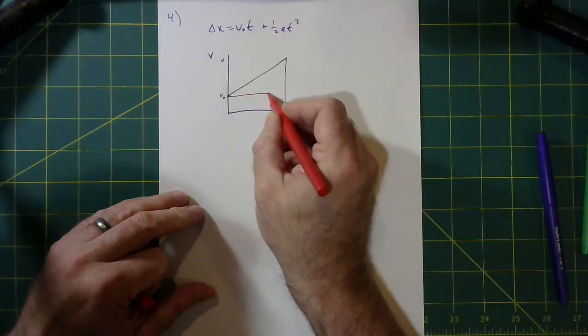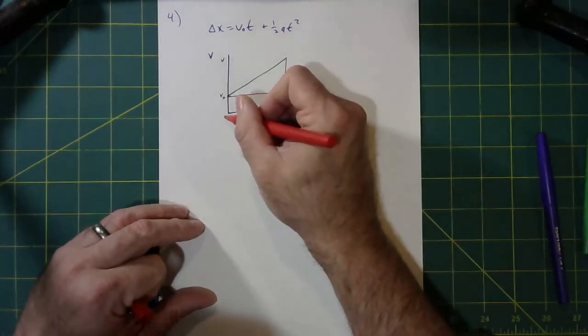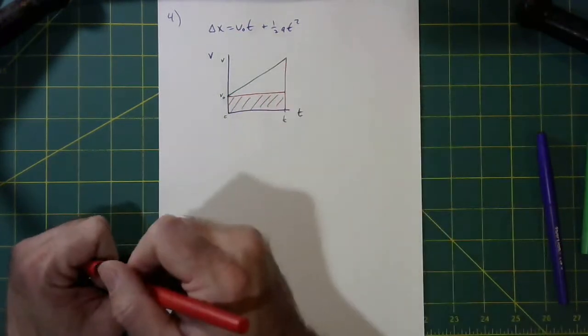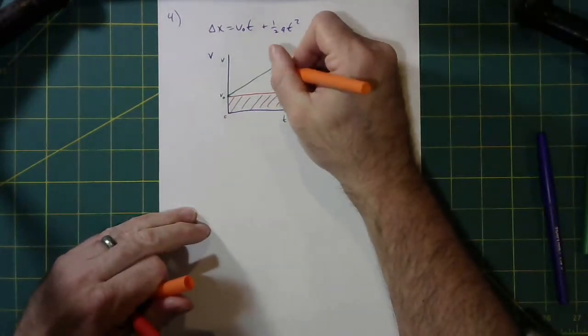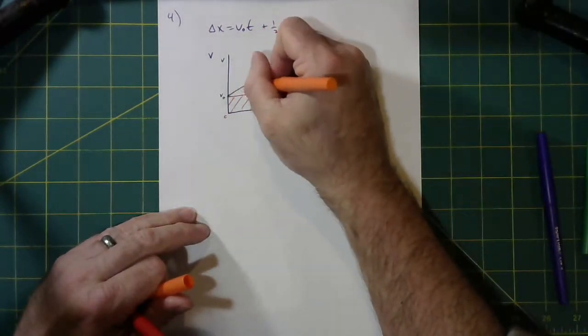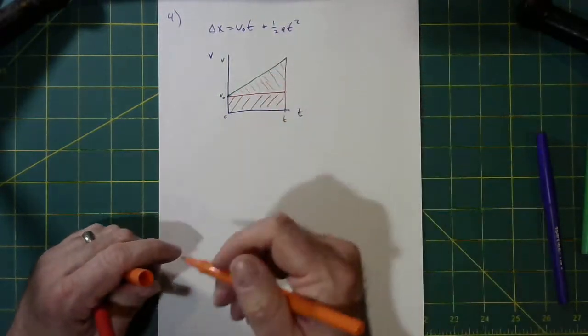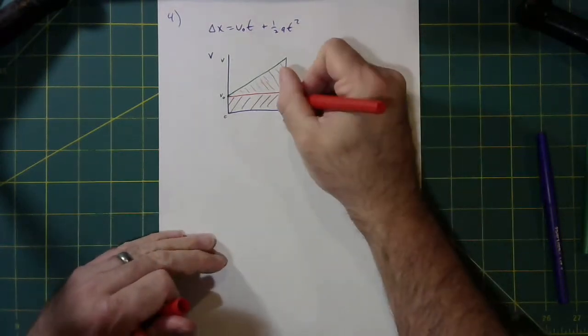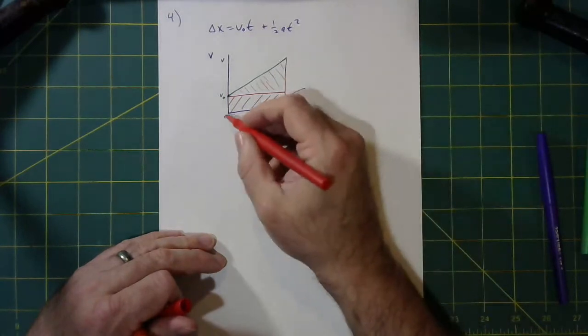And this is no surprise to folks who had honors physics. They recall that we took this and we said, take a look at this rectangle and then take a look at the triangle. And we would add them up to get the total area, which would be the total displacement. And so you'd say, this area down here, I'm going to say the area is going to be width times height.